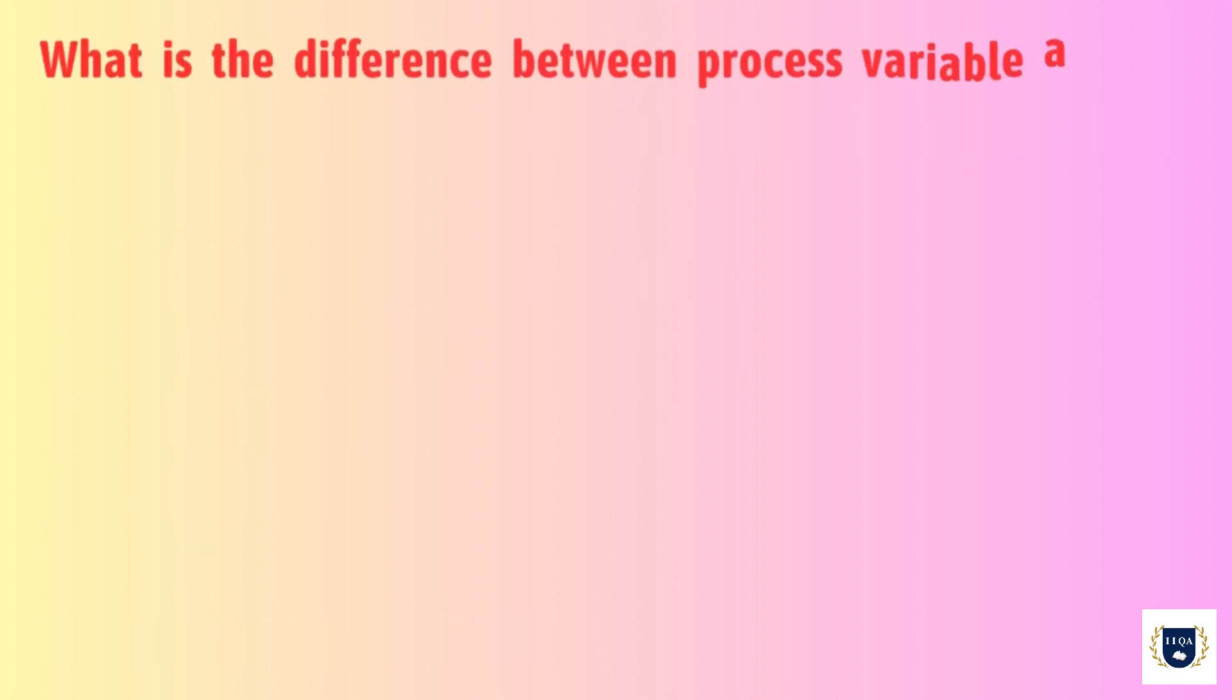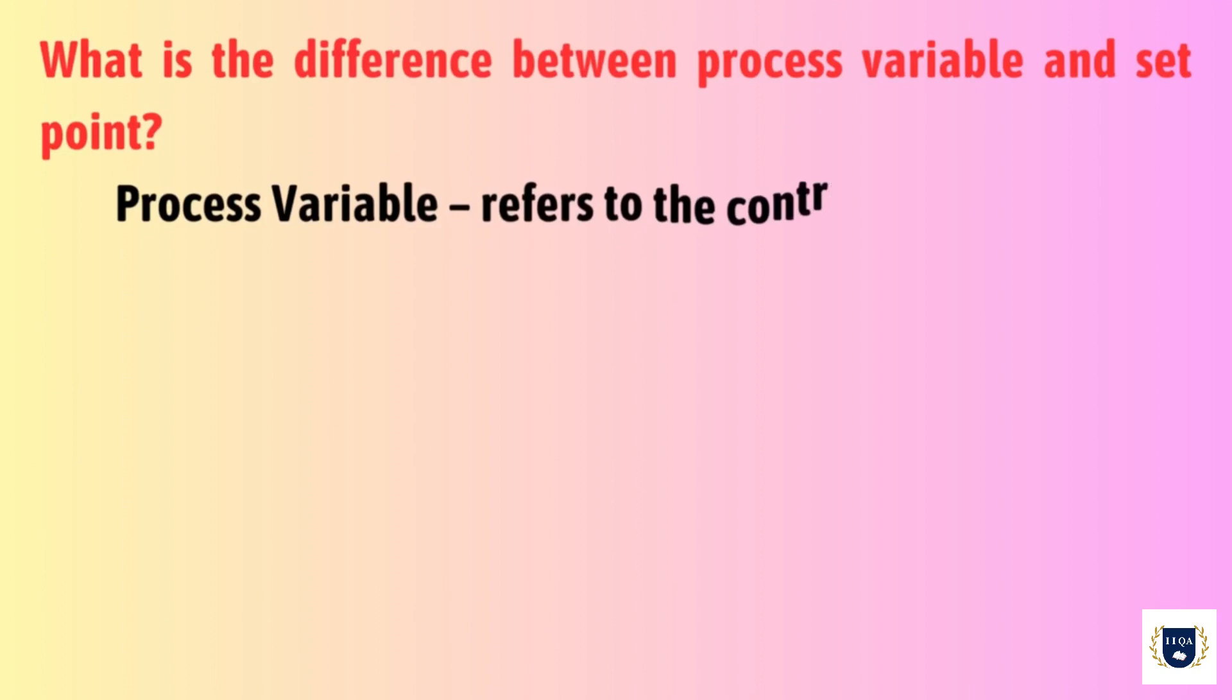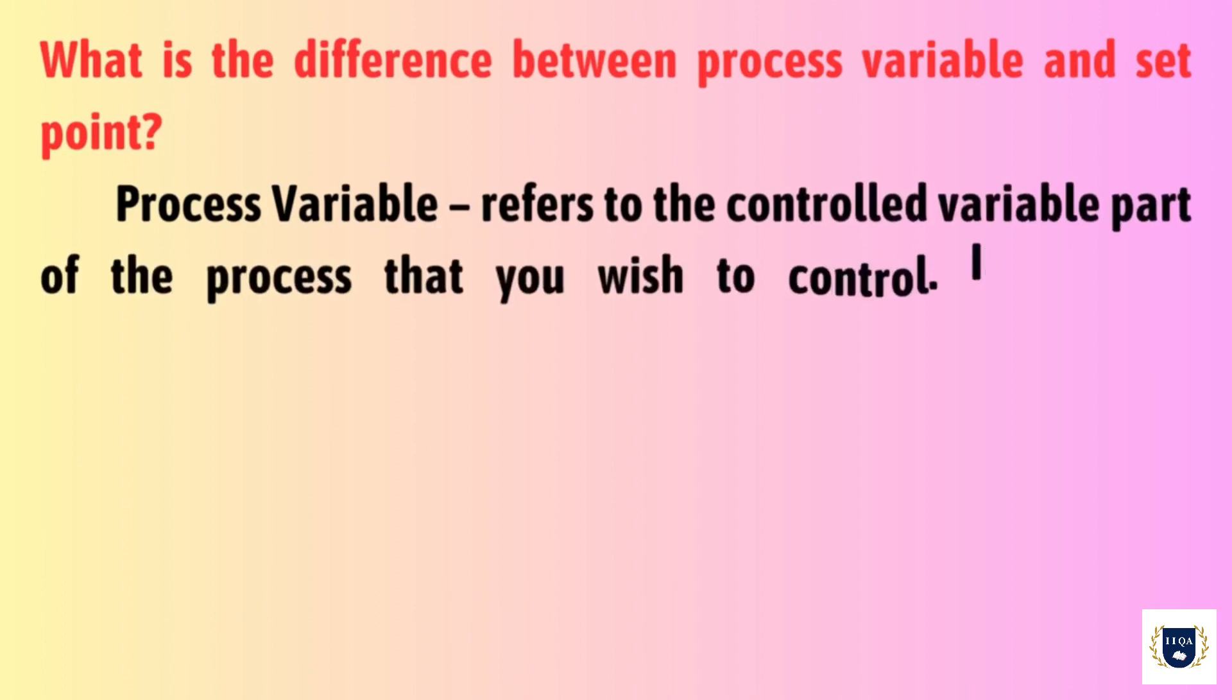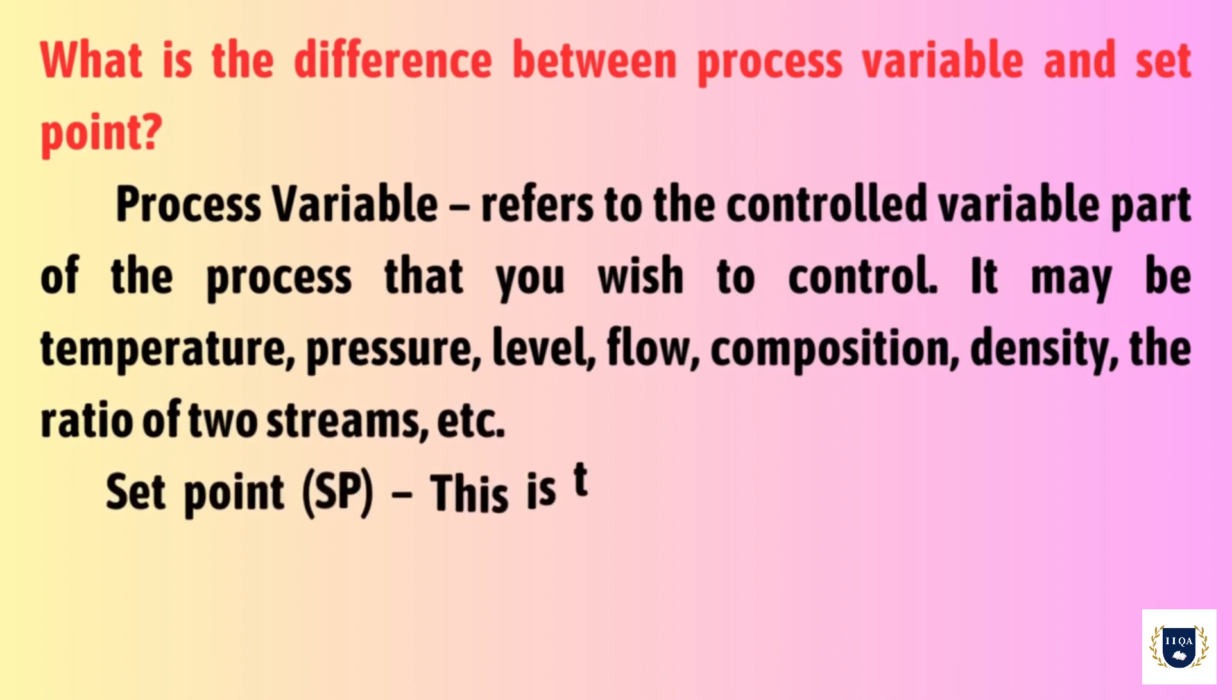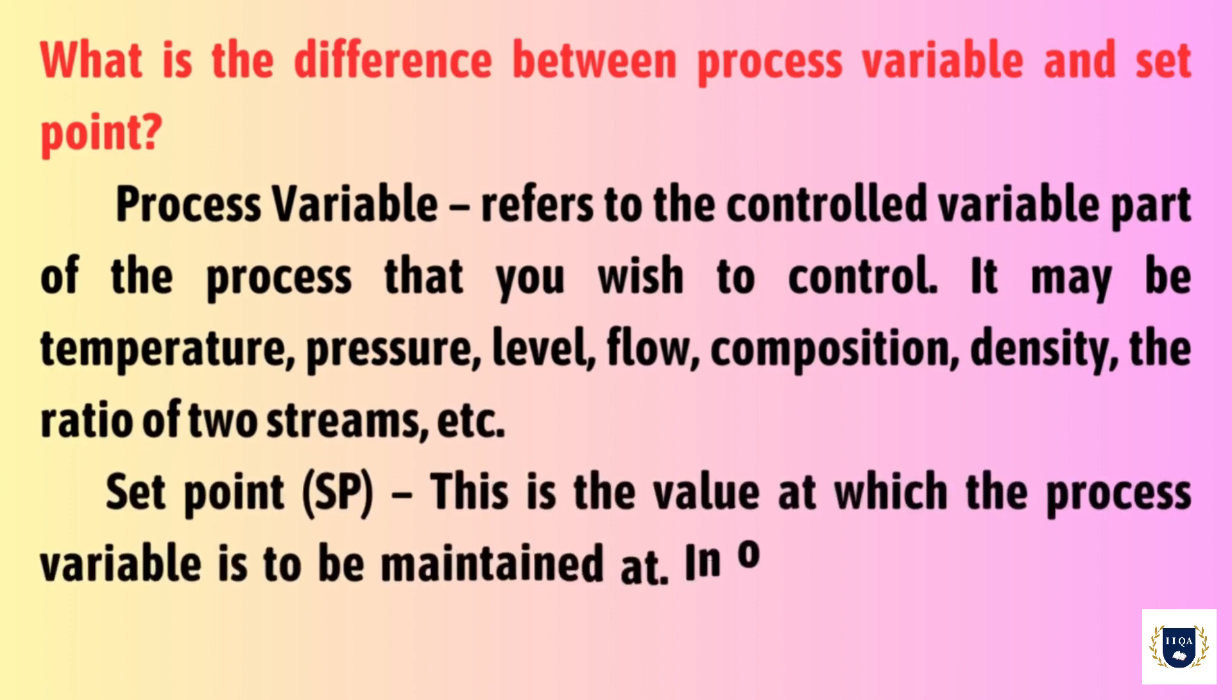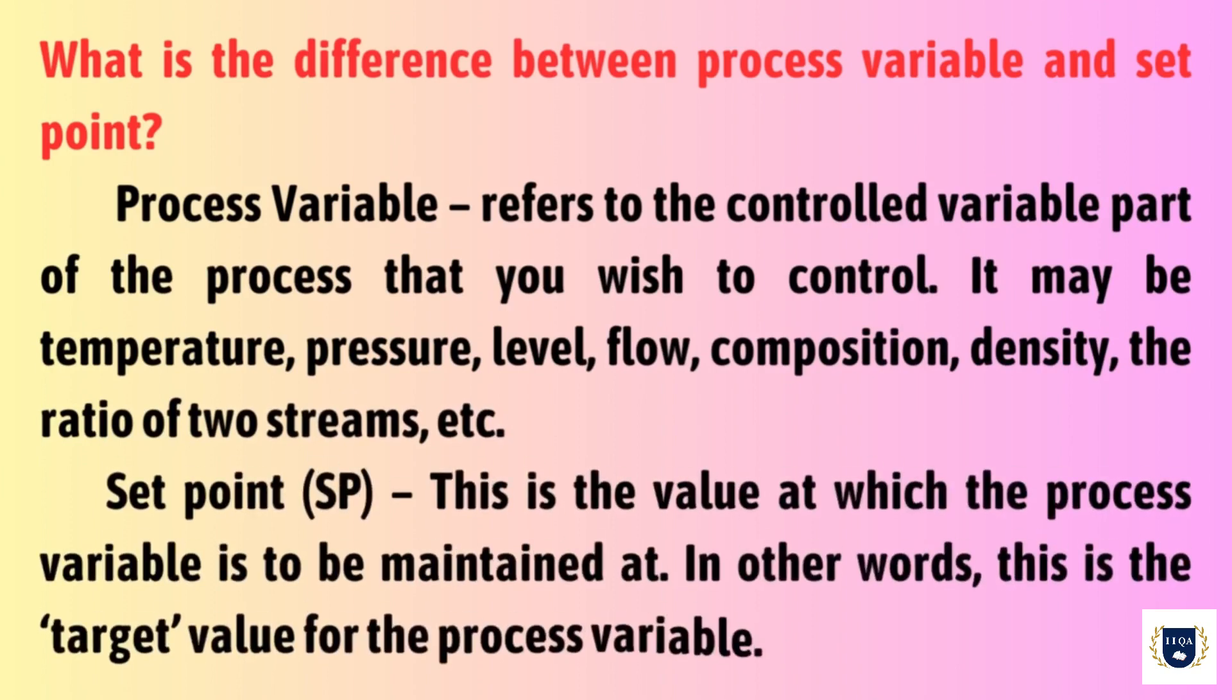What is the difference between process variable and set point? Process variable refers to the controlled variable part of the process that you wish to control. It may be temperature, pressure, level, flow, composition, density, the ratio of two streams, etc.